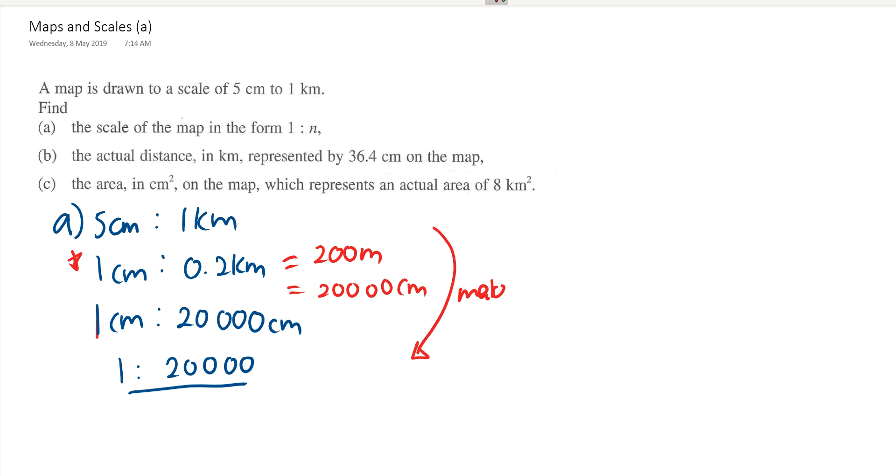Sometimes question may ask for RF, so RF is a fraction, so it's like 1 over 20,000. That will be the answer.